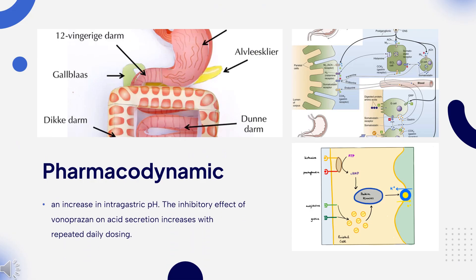Pharmacodynamics: The use of Bonoprazin leads to an increase in intragastric pH. The inhibitory effect of Bonoprazin on acid secretion increases with repeated daily dosing. Although the antisecretory effect of Bonoprazin decreases after drug discontinuation, intragastric pH remains elevated for 24–48 hours. Bonoprazin does not have a clinically significant effect on QT prolongation.